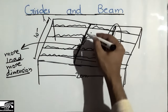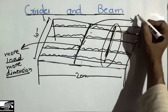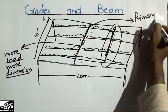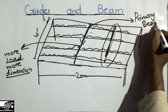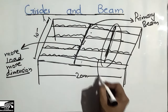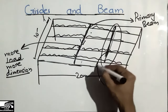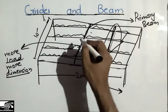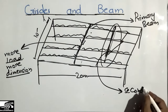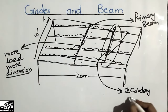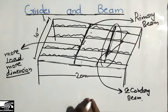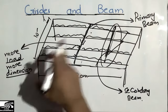In this case, the girder is called the primary beam. The beams that transfer load into the girder are called secondary beams. Hope this helps you understand the difference between the girder and the beam — they are not the same, and there are specific differences as described here.